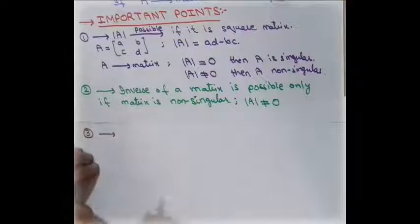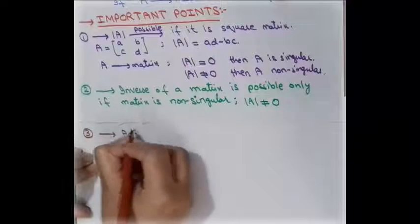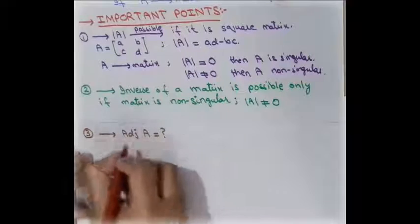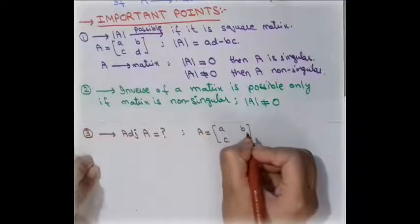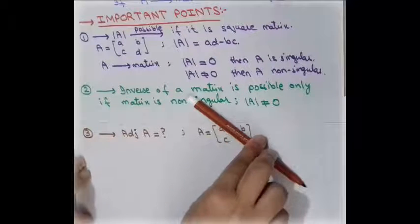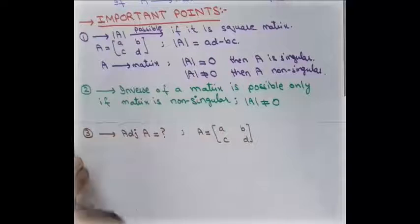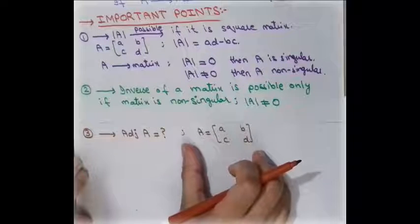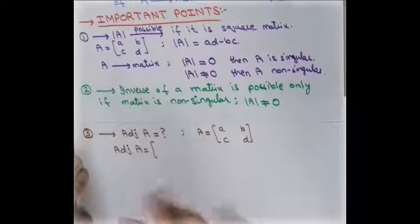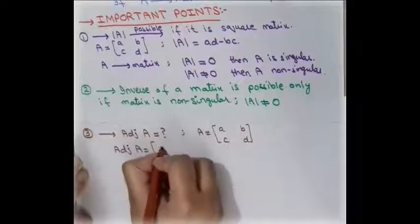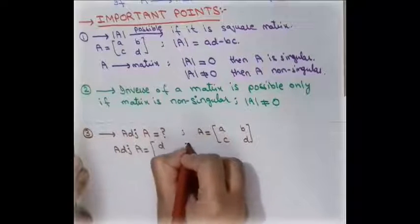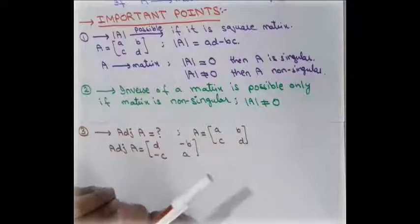The third point is to find the adjoint. The adjoint of a matrix A is obtained by interchanging the diagonal elements and changing the signs of the other elements. For example, if we have a matrix A with entries a, b, c, d, the adjoint of A places d and a on the diagonal and uses minus c and minus b for the off-diagonal entries.